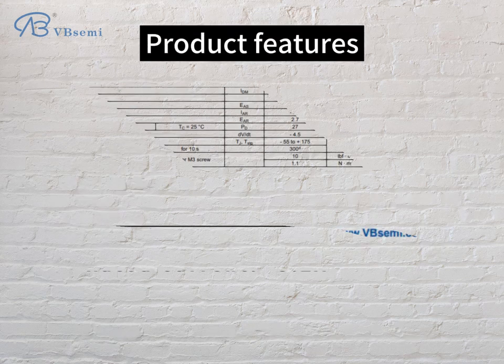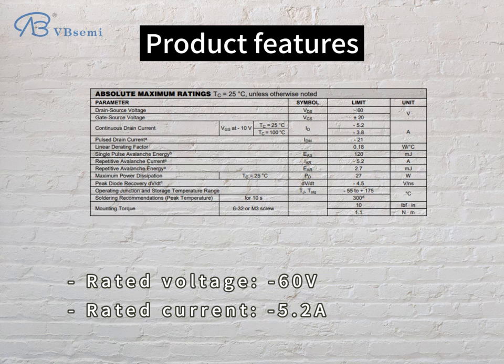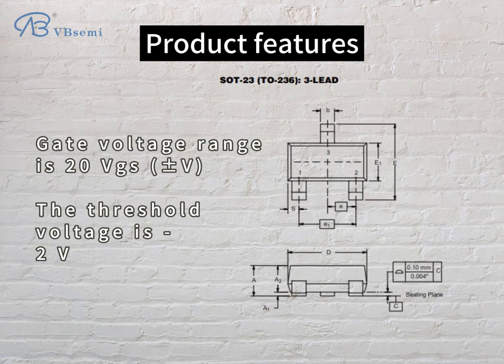Product features: rated voltage is negative 60V, rated current is negative 5.2A. The gate voltage range is 20V GSV, and the threshold voltage is negative 2V.